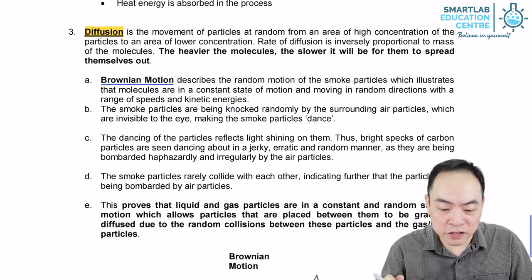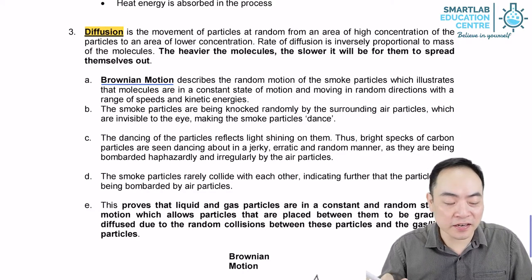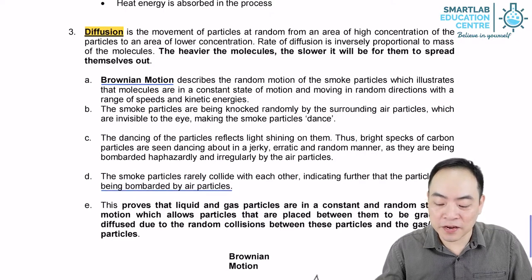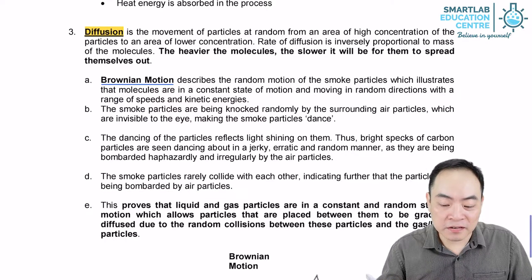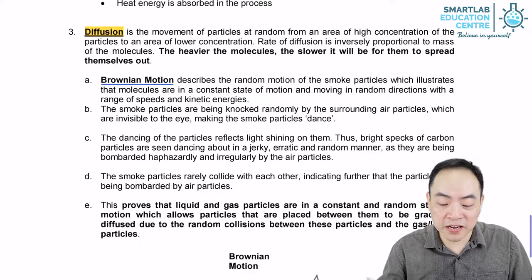Brownian motion describes the random motion of smoke particles, which illustrates that molecules are in a constant state of motion and moving in a random direction. The smoke particles are being knocked randomly by the surrounding air particles, which are invisible to the eyes, making the smoke particles appear dense. The dancing of the particles reflects the light shining on them.